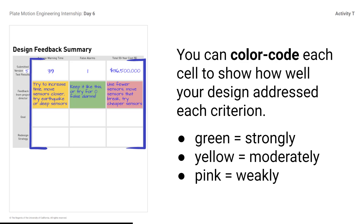You can color code each cell to show how well your design addressed each criterion: green for strongly, yellow for moderately, pink for weakly. In this example, it is clear that the design strongly addresses the criterion of minimizing false alarms, but needs work in the other criteria.